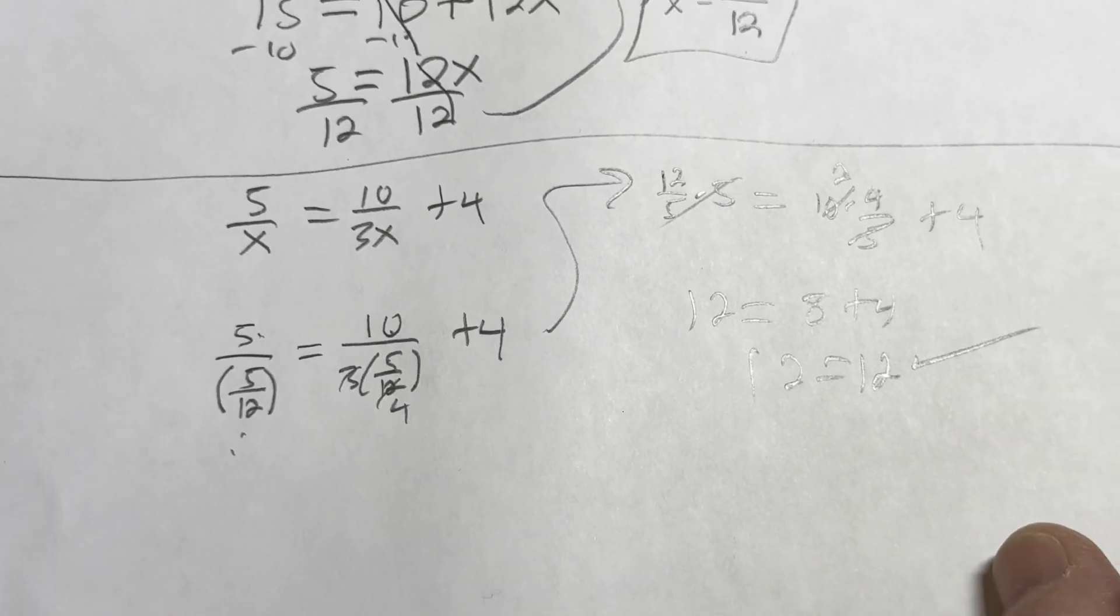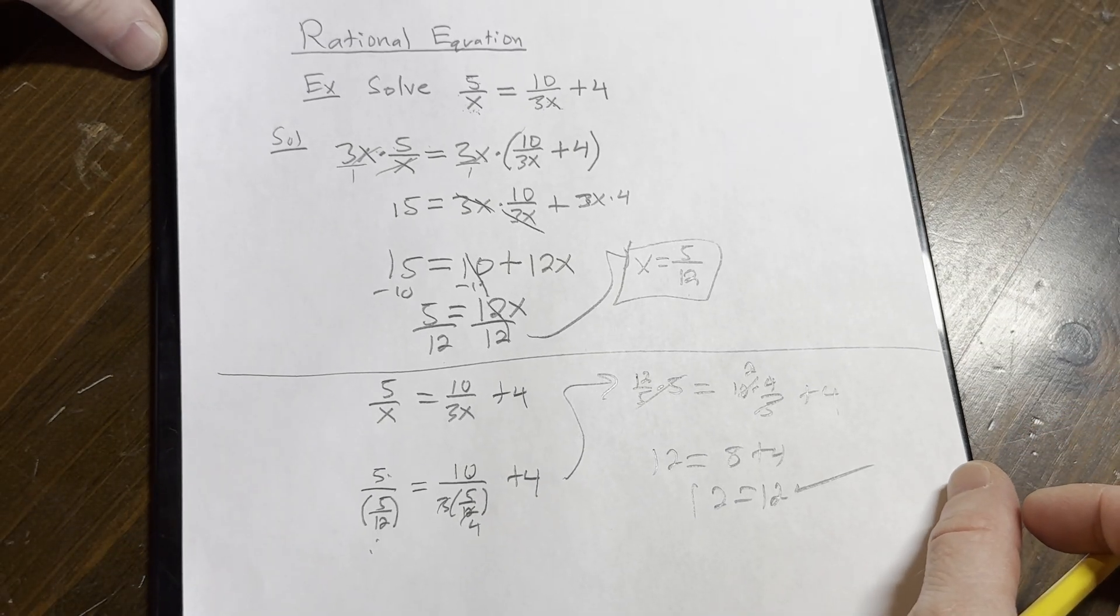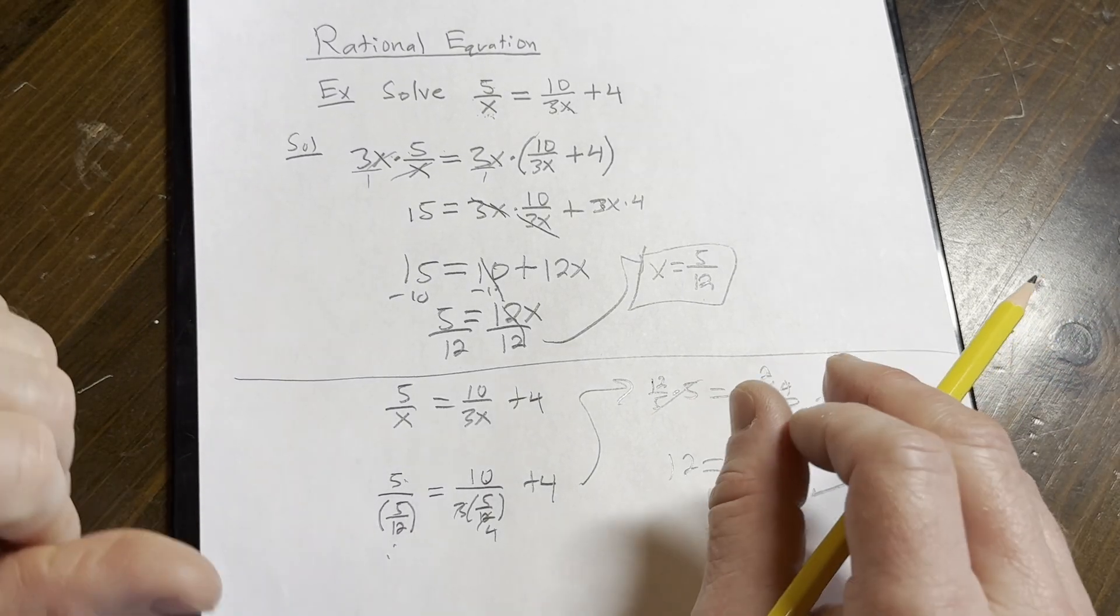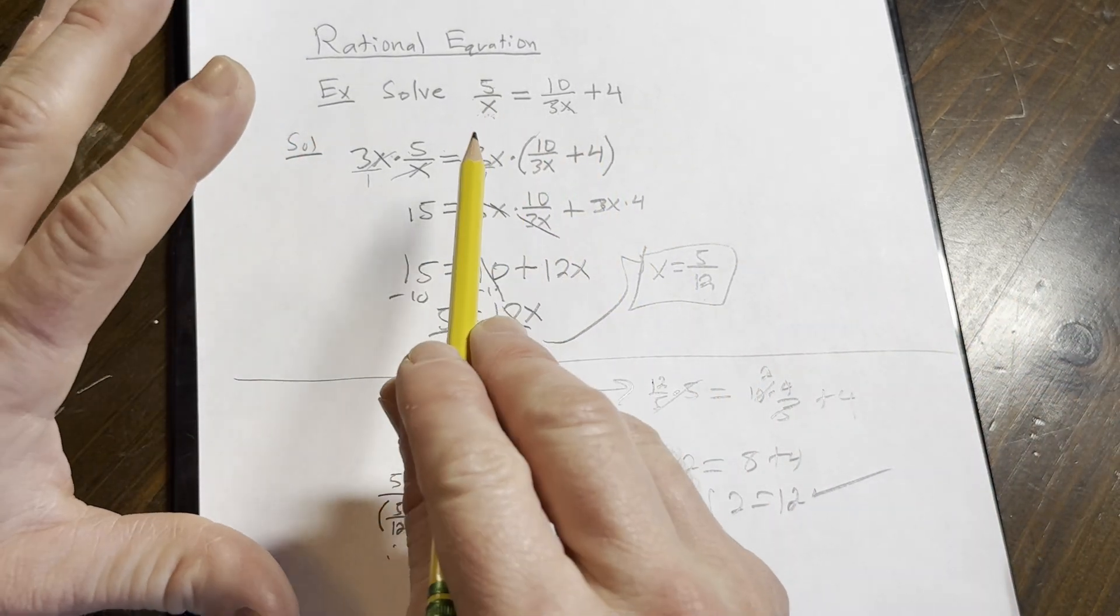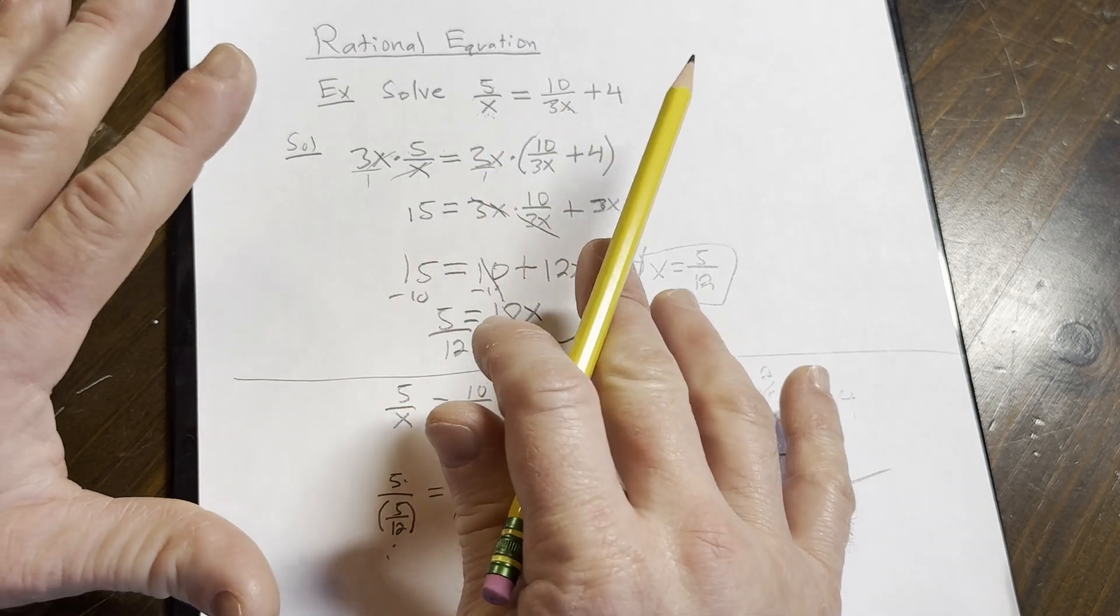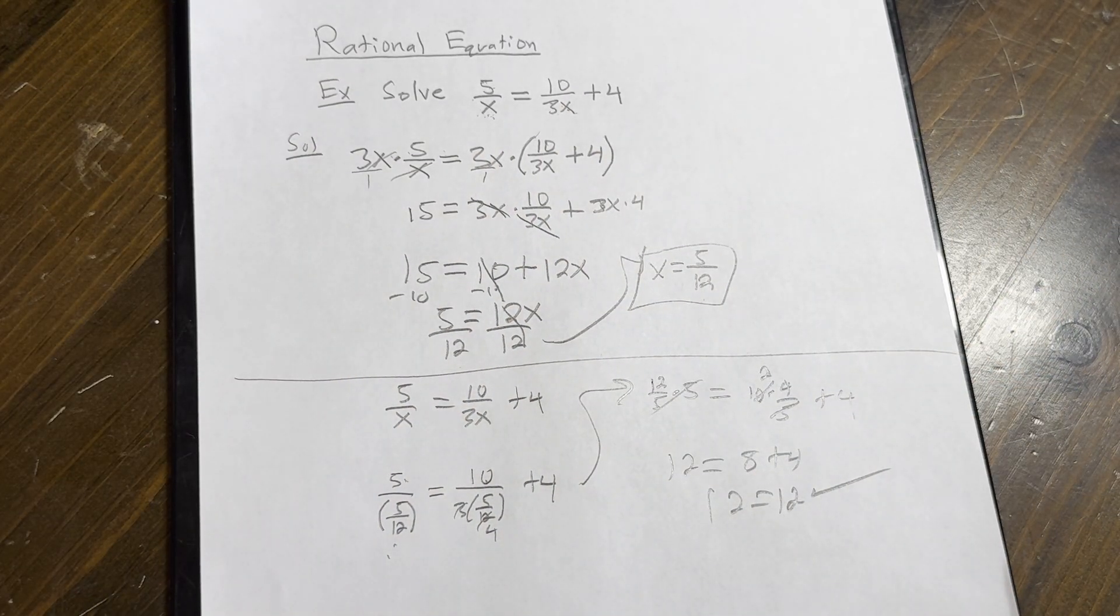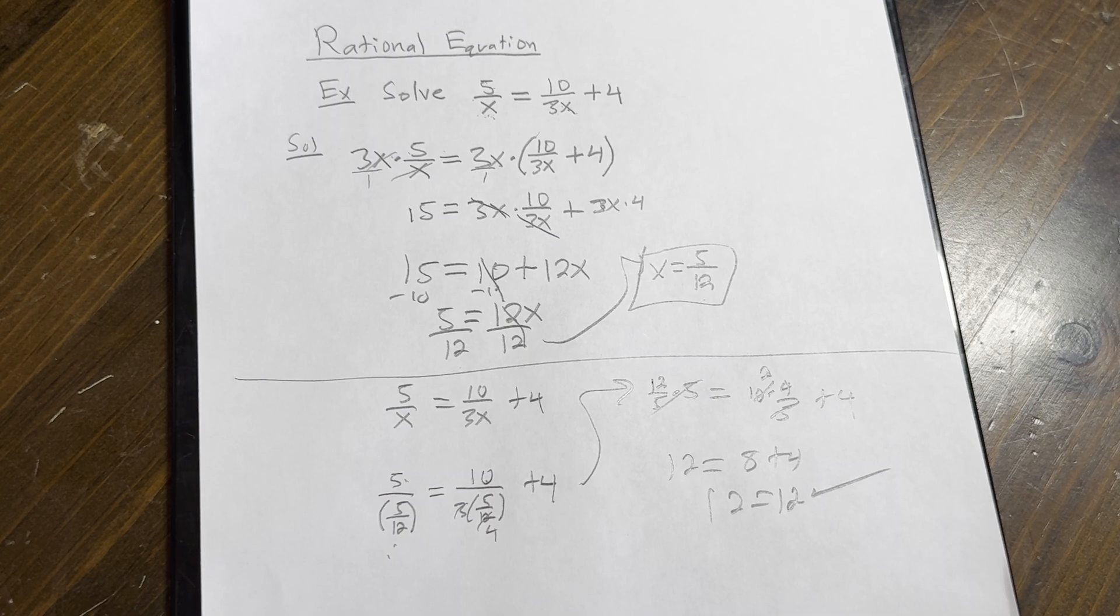So there you have it. Rational equation. We did that pretty quickly. But this is an example of solving a rational equation. And again, a rational equation is an equation with one or more rational expressions. Hopefully, this video has taught you a cool piece of mathematics. Take care.